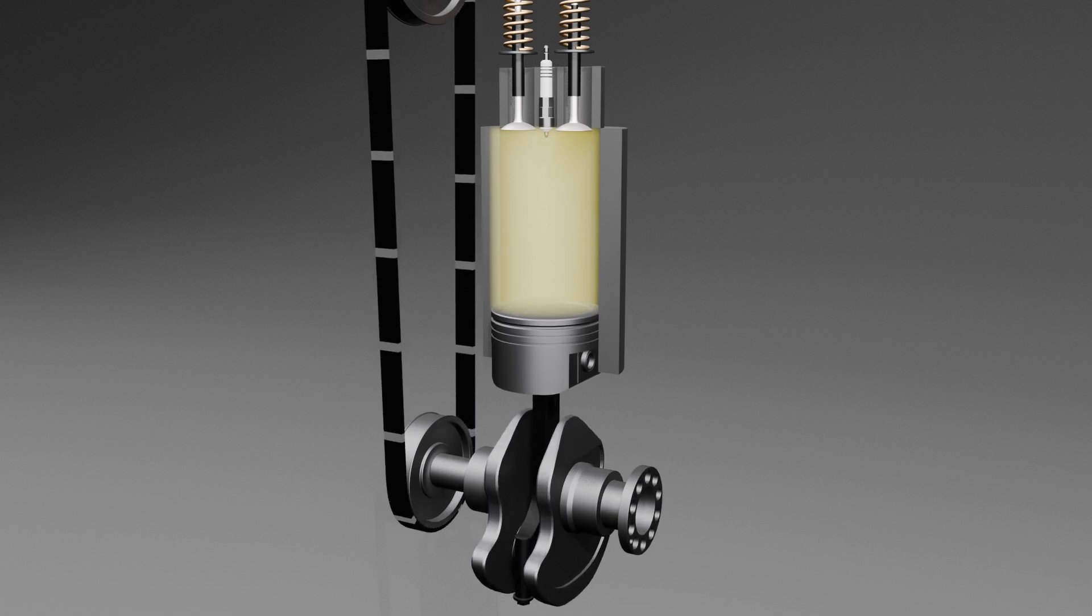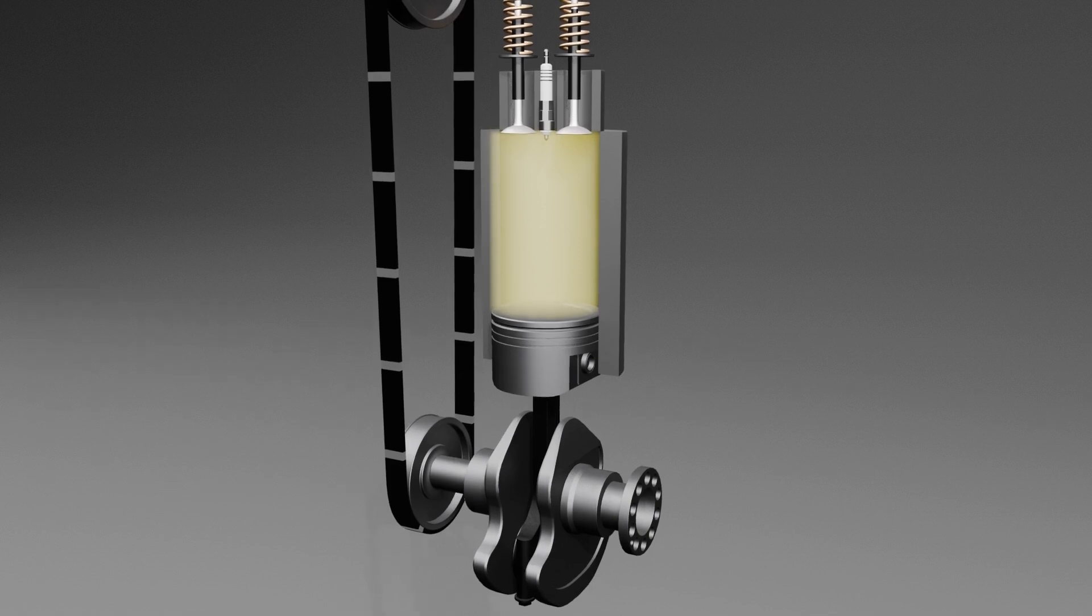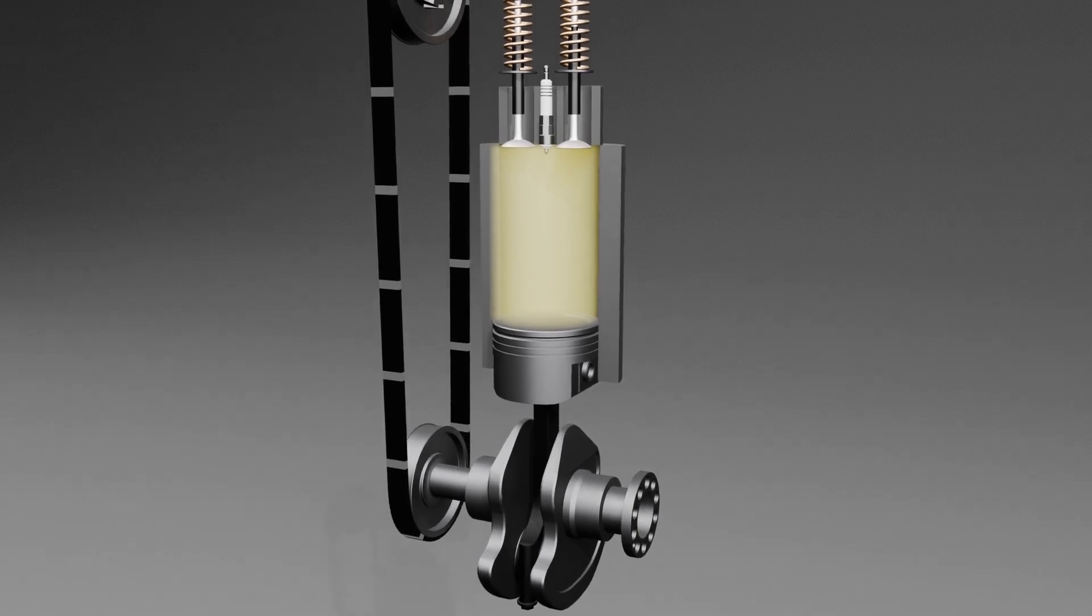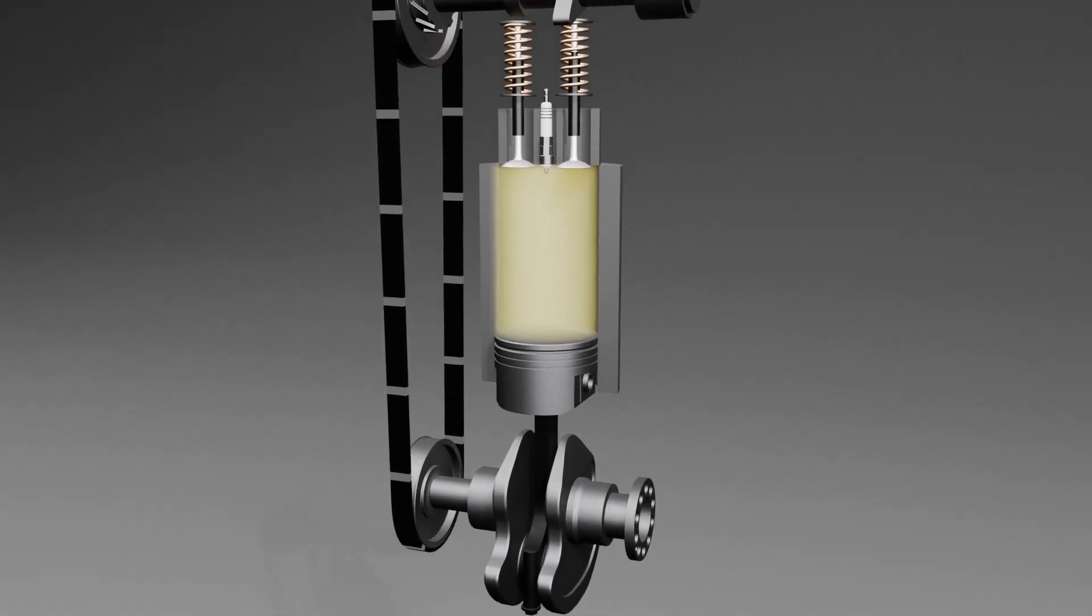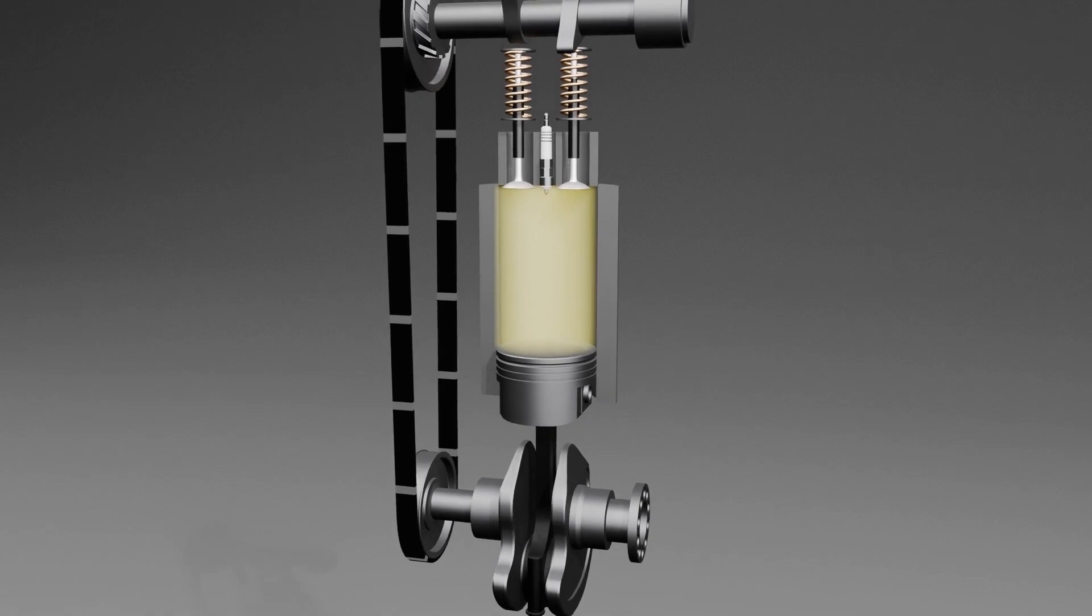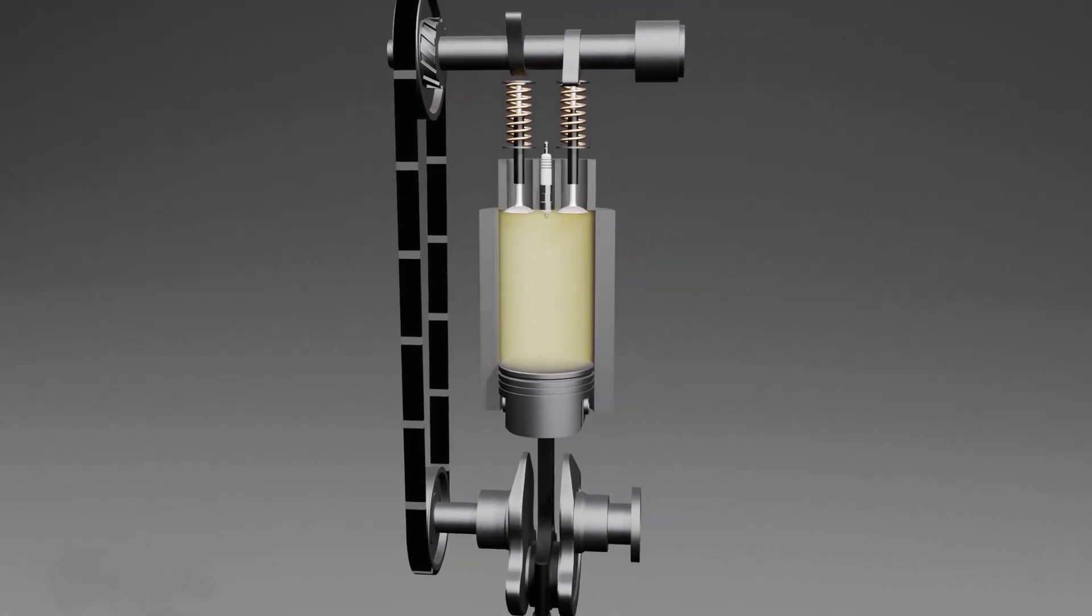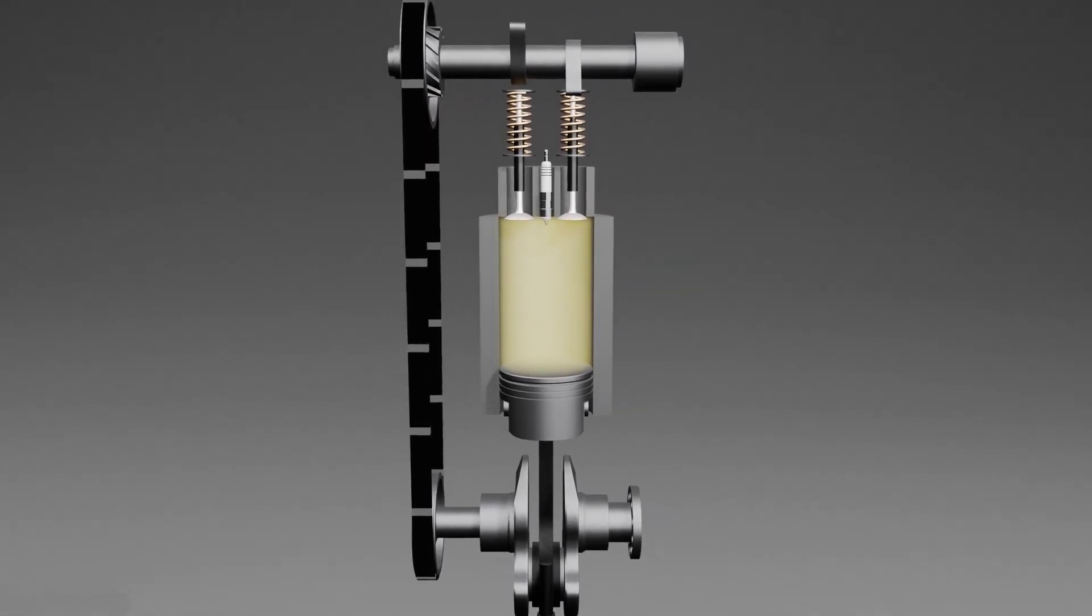The crankshaft is connected to the gearbox, which adjusts its rotational speed and torque. This adjusted power is then transmitted to the rear wheels through a driveshaft. This means that the rotation of the crankshaft is what ultimately moves the wheels.